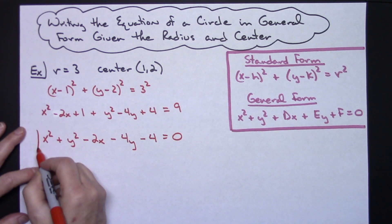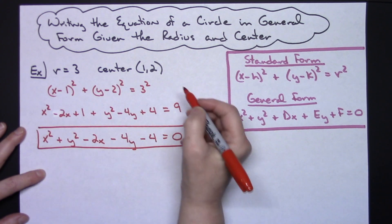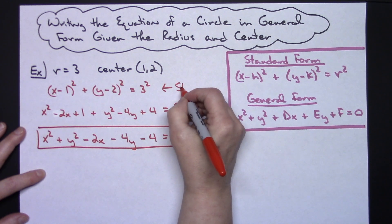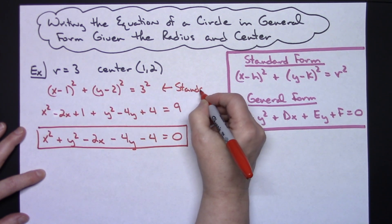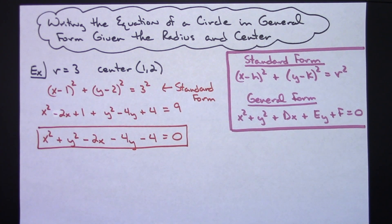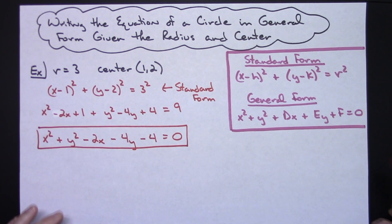So this right here is general form of that circle. And then of course that step up there is our standard form assuming that you would multiply that out and have a 9 right there. So you start with standard form and then multiply everything out and manipulate things so that they are in the correct order that you have general form.